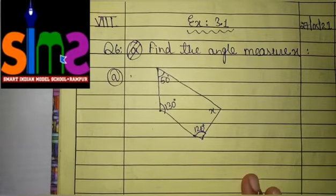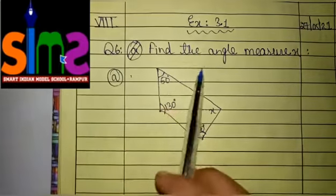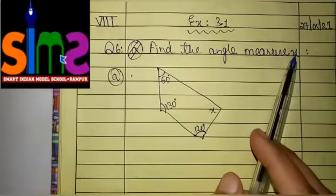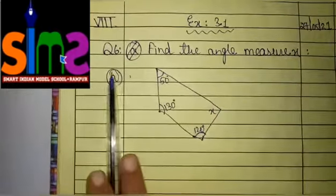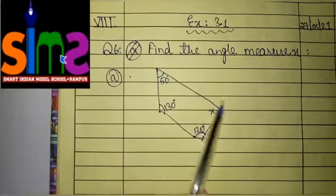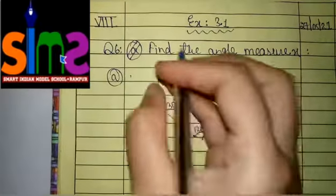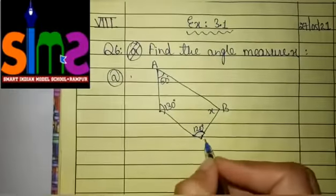So we are here today on question number 6. The question number 6 of this exercise is find the angle measure X. We have given a very first part and in the first part we have given a picture. Let us consider the name of this picture is ABCD.